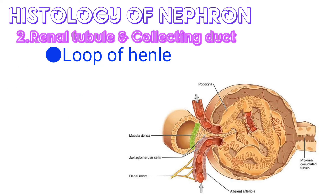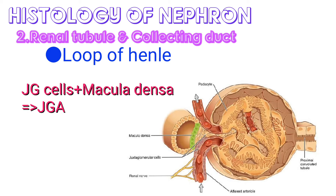Along with the macula densa, the wall of the efferent arteriole contains modified smooth muscle fibers called juxtaglomerular cells. The juxtaglomerular cells and macula densa together constitute the juxtaglomerular apparatus.